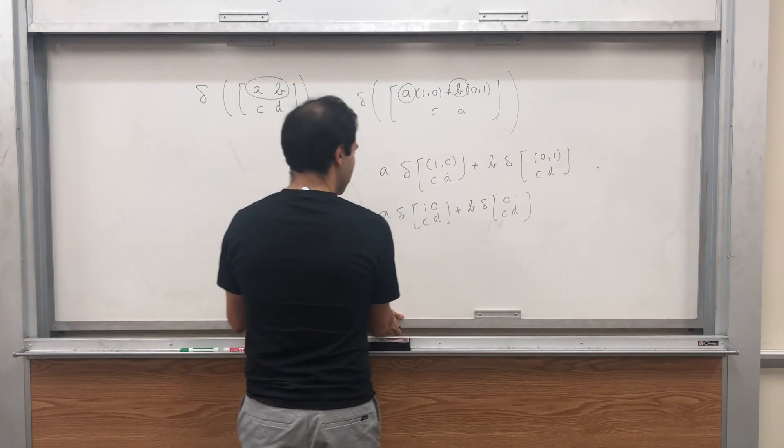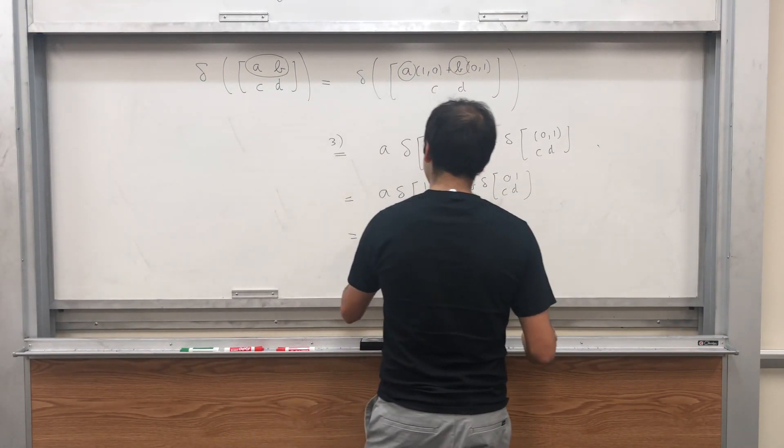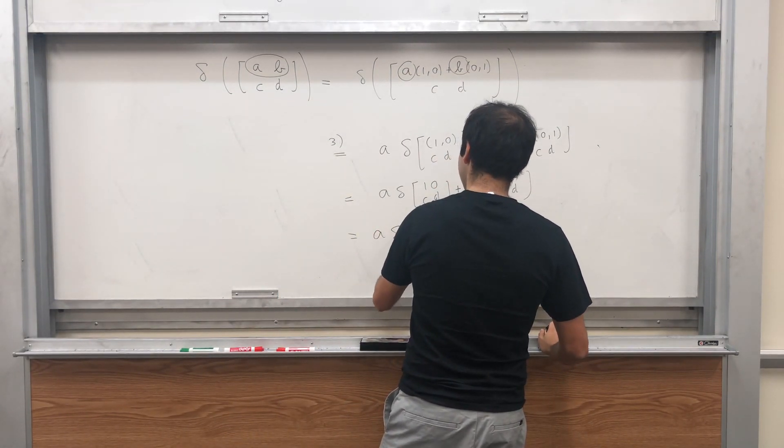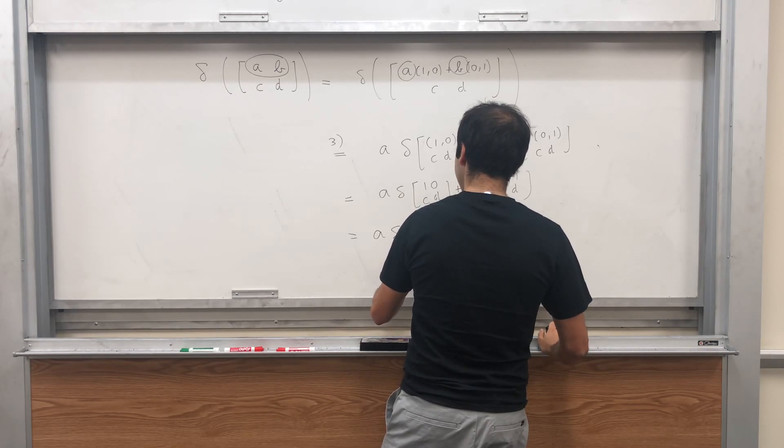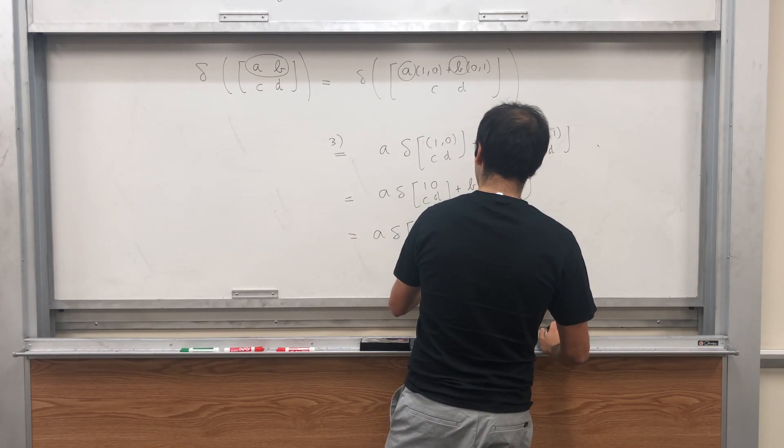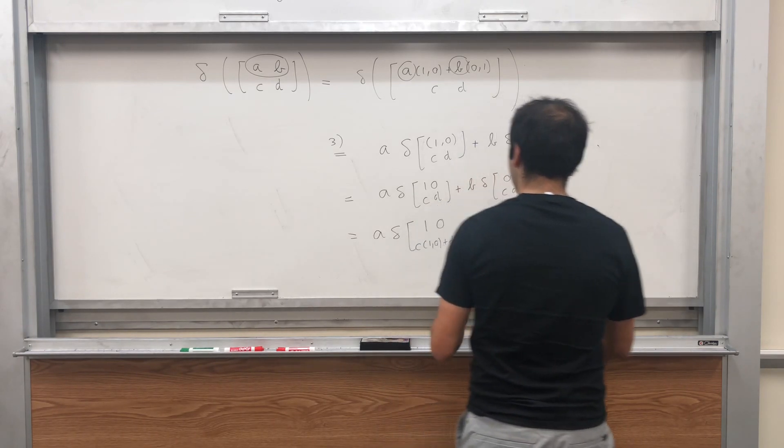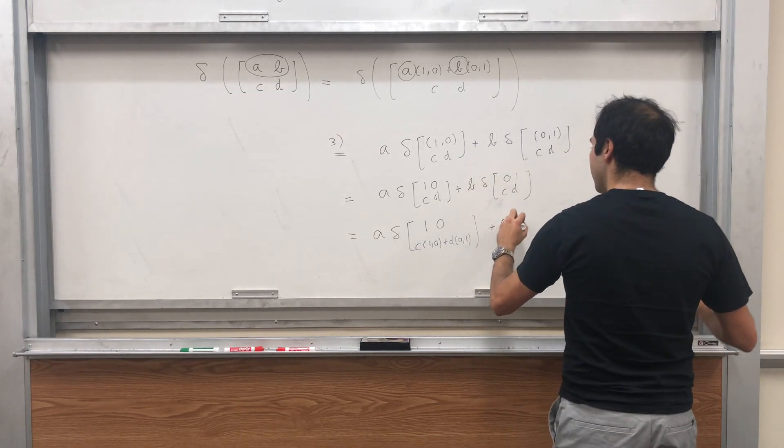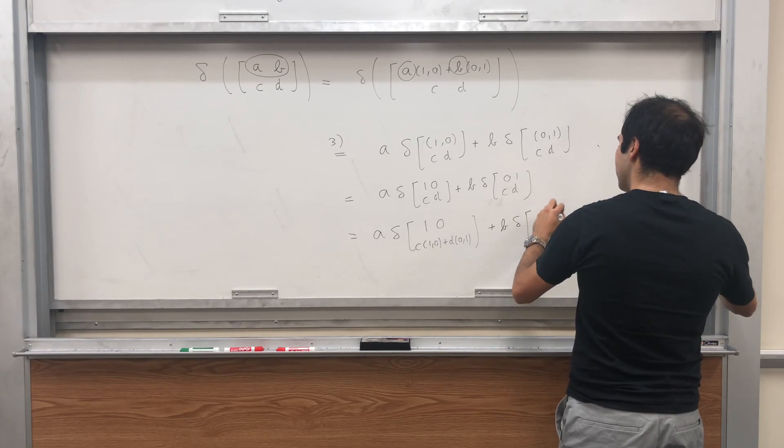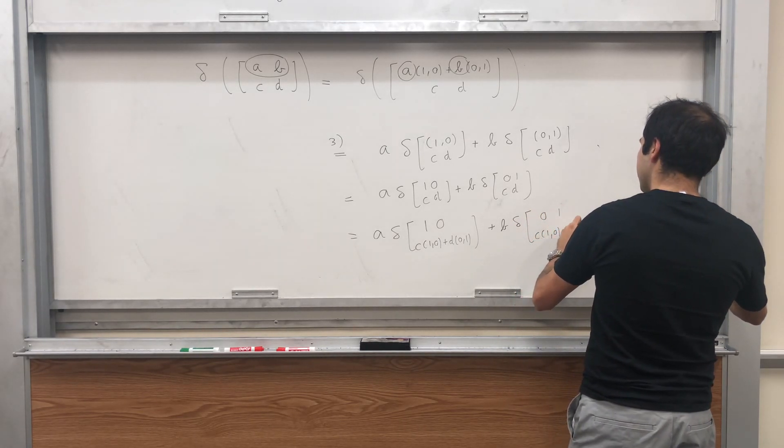Well, CD, that is C times 1, 0 plus D times 0, 1. And B times delta of 0, 1, C times 1, 0 plus D times 0, 1.